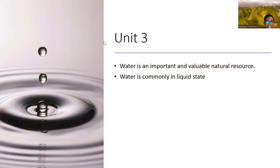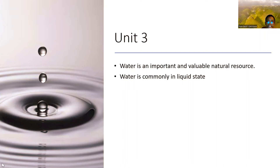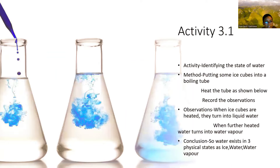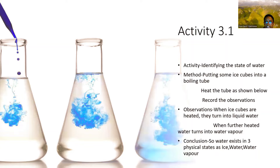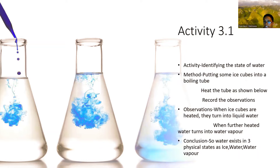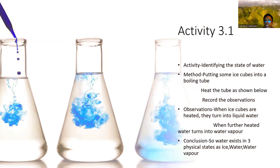Water is an important and valuable natural resource. Water is commonly found in its liquid state. Water is a limited resource. Activity one: identifying the state of water. Method — put some ice cubes into a test tube and heat it. Observation: when ice cubes are heated, they turn into liquid water; when further heated, water turns into water vapor. Conclusion: water exists in three physical states — ice, water, and water vapor.